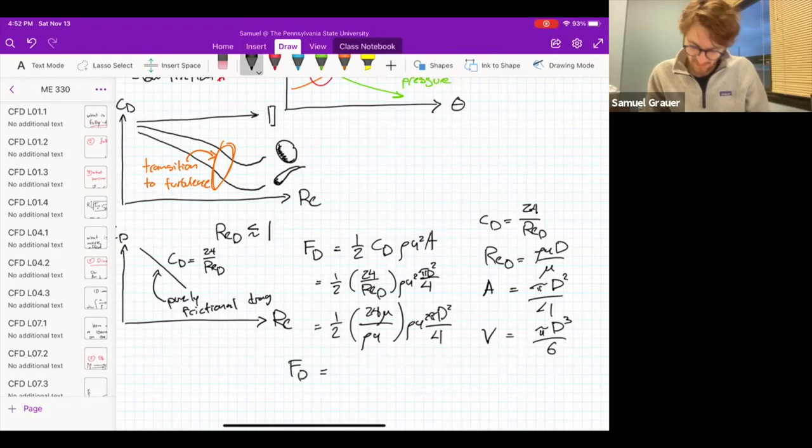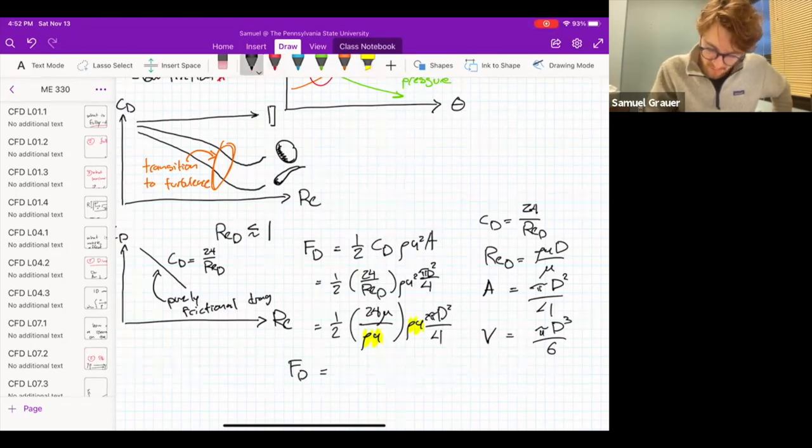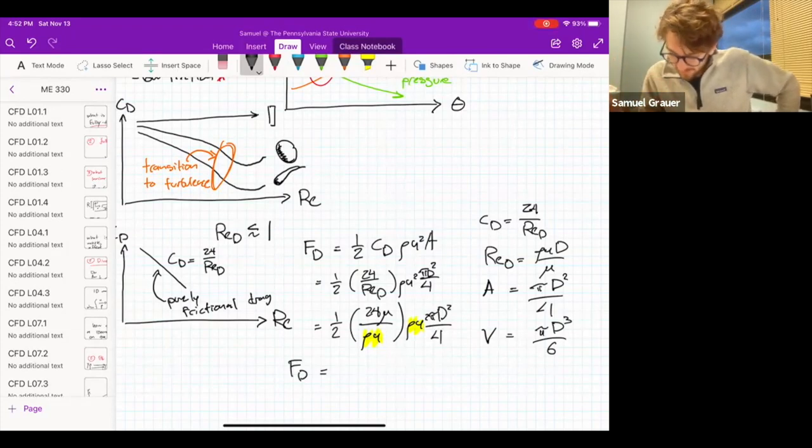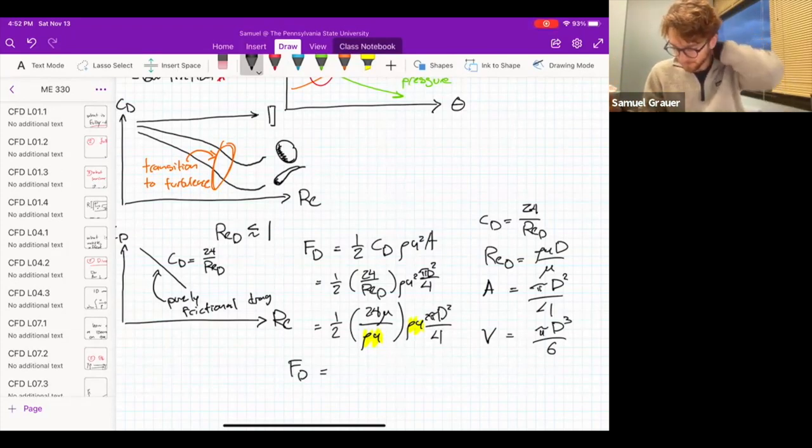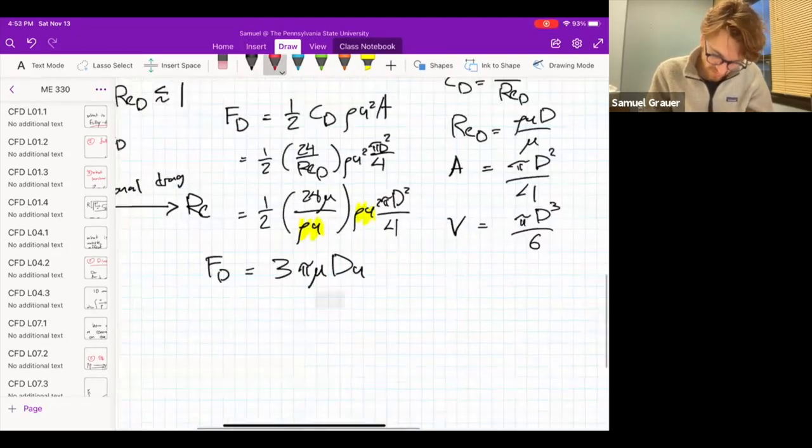Now, of course, the rho U is going to cancel with one of these rho U's, and we're going to be able to simplify our expression in terms of the numbers that we have. So we can take 24 over two is going to be 12. And then we divide by three and we're going to get three overall. So we divide by four. We're going to get three. So we are going to have an expression that looks like this. We're going to have FD is equal to 3 pi mu D U. And this is a very famous and important expression known as Stokes law.